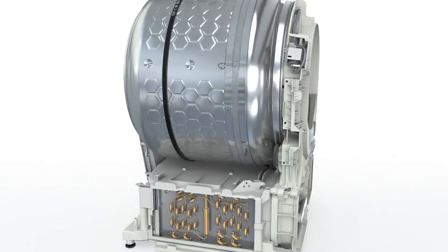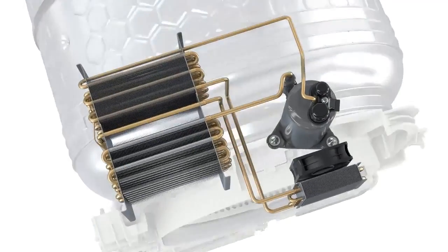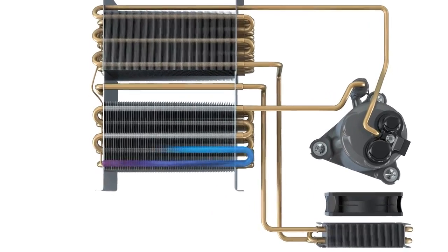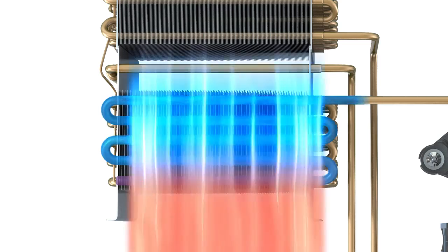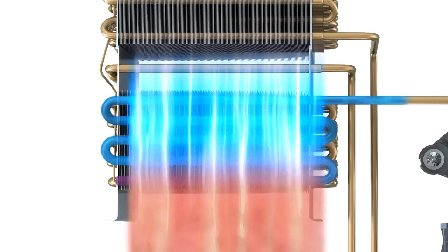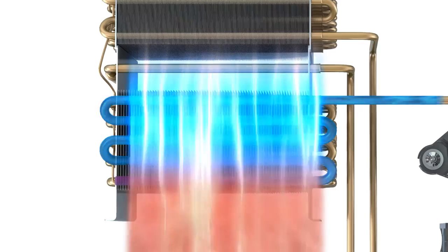The second circuit, containing the refrigerant, is responsible for heating and cooling process air. To do this, the compressor pressurizes the coolant.